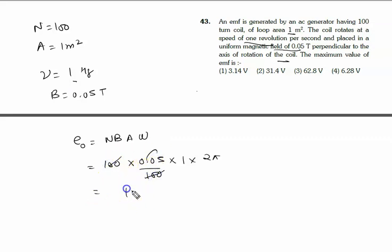The answer will be 10 times π. So what is the value of π? Pi is 3.14. So when we solve it, it is 31.4 volts. The right answer of this problem will be option 2, that is 31.4 volts.